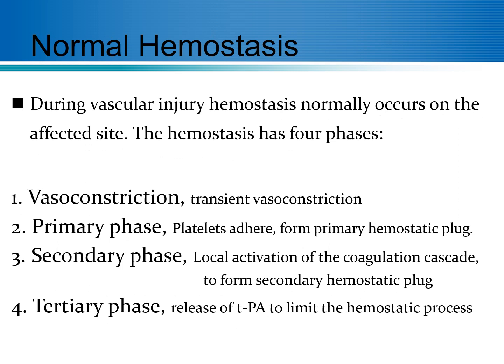As you know, normally hemostasis occurs in our body after vascular injury. It will occur over four phases. The first is transient vasoconstriction at the site of injury. Then the platelet will adhere at the site of injury to form what we call the primary hemostatic plug. Then the coagulation cascade will be activated to form the secondary hemostatic clot.